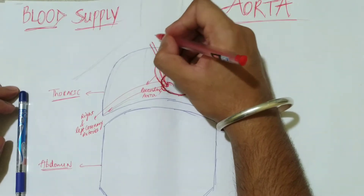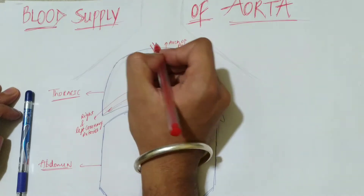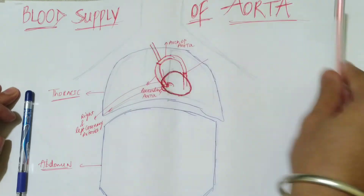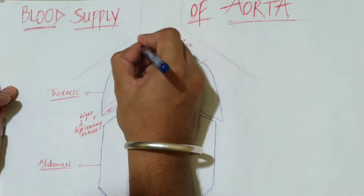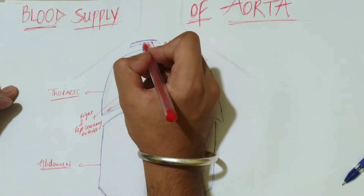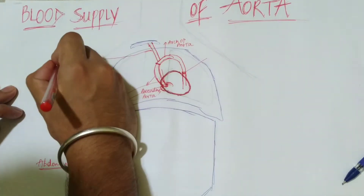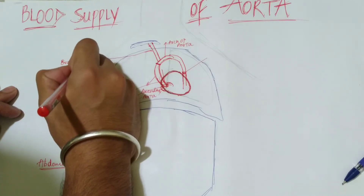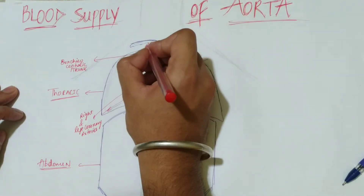The brachiocephalic trunk divides into two branches. It divides at the level of the right sternoclavicular joint — not sternocostal, but sternoclavicular. Consider this as your clavicle bone. At that level, the brachiocephalic trunk — which is not very long — divides into two branches.